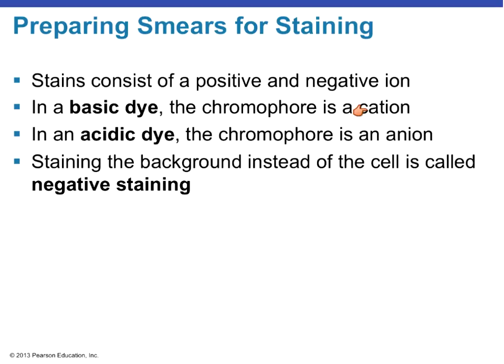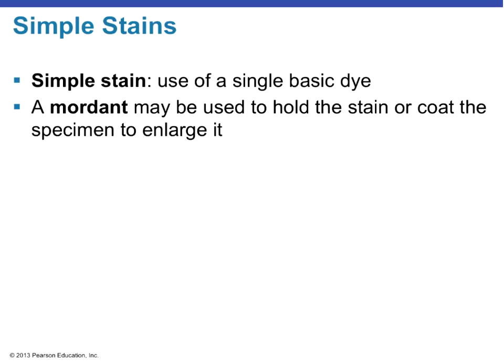Sometimes we don't stain the specimen itself but stain the background instead — that's called negative staining, used with dark field illumination. Simple stains use just one dye. A mordant is used to either hold the stain onto the specimen or to coat and enlarge it — for example, to enlarge flagella or to hold the stain during gram staining.